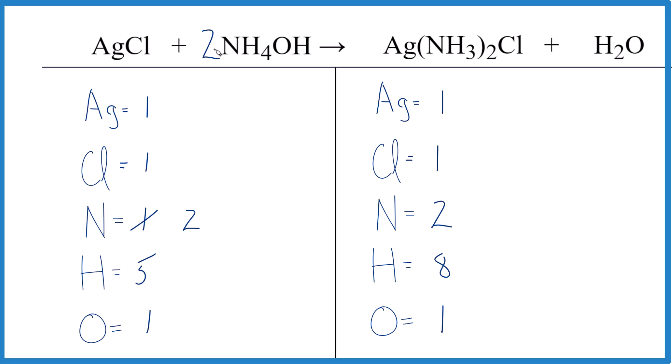And then hydrogens, we have 2 times 4 is 8. 8 plus 2 times the 1. So 8 plus 2, now we have 10. Oxygens: 2 times the 1 oxygen, now we have 2 oxygens.